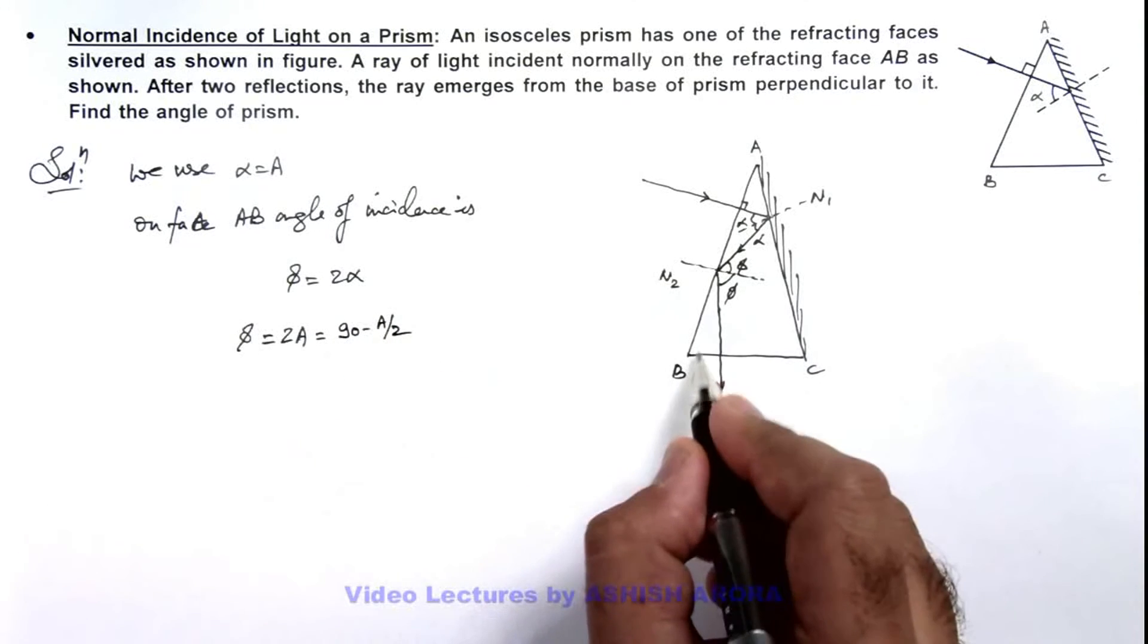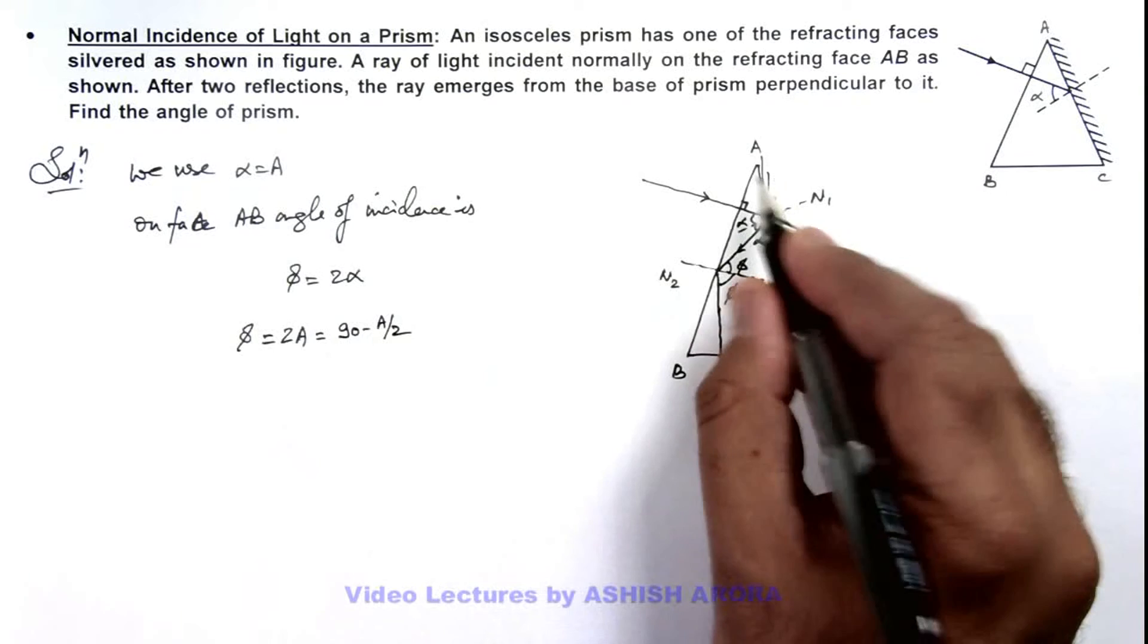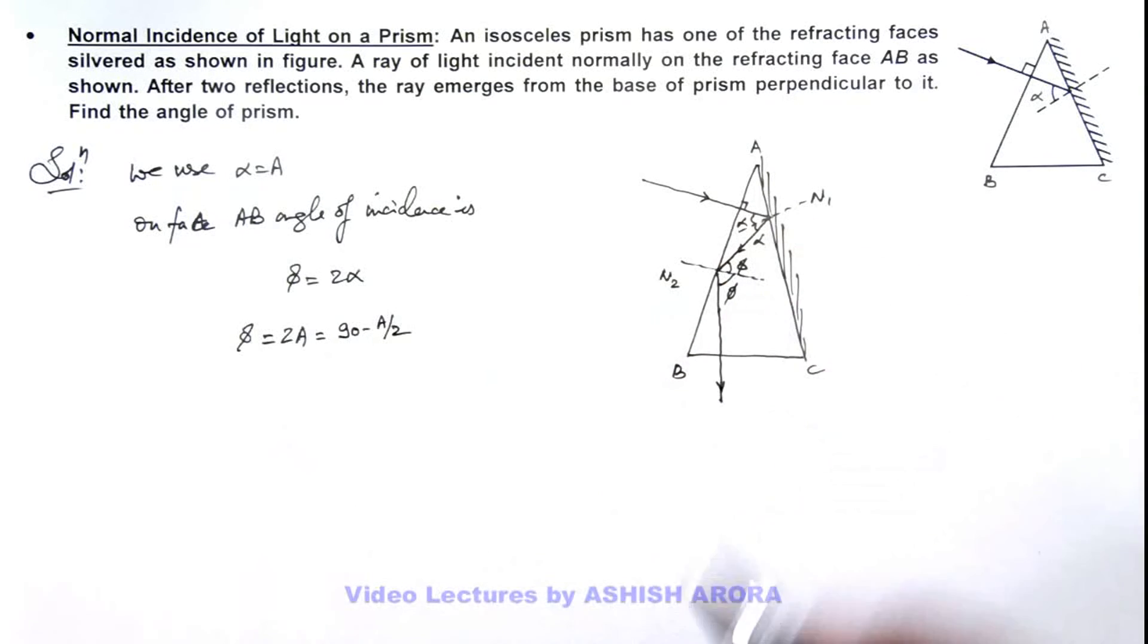Because this angle B is equal to 90 minus A by 2, as the prism is given to be an isosceles prism.